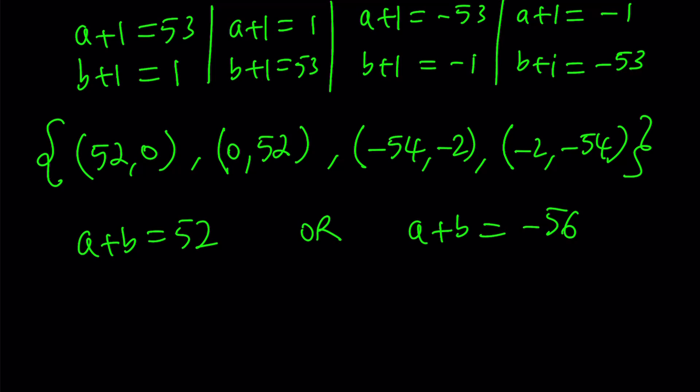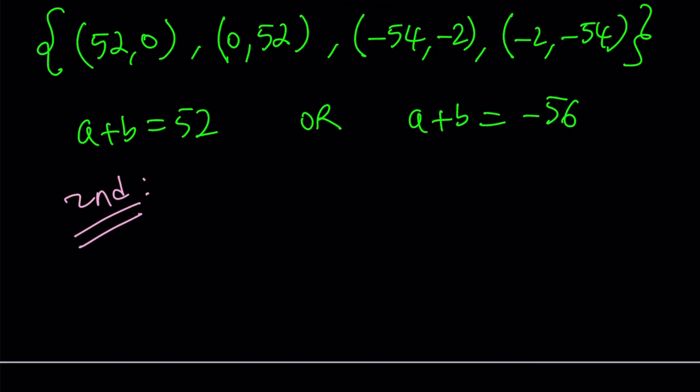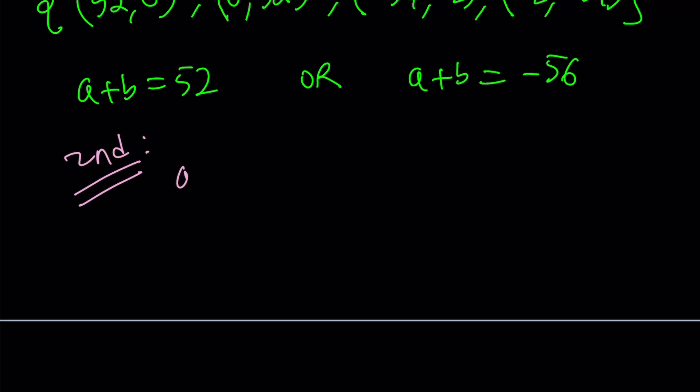Now let's go ahead and talk about the second method. Now any guesses about how the second method is going to go? Well, here's what we're going to do. We're going to start with the product, but we're going to keep the a, b. So let me rewrite the original problem: a plus ab plus b equals 52.